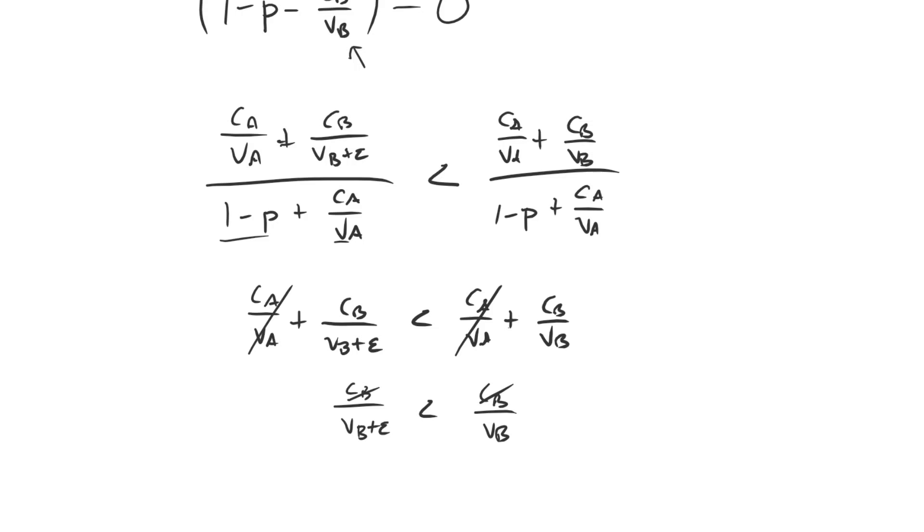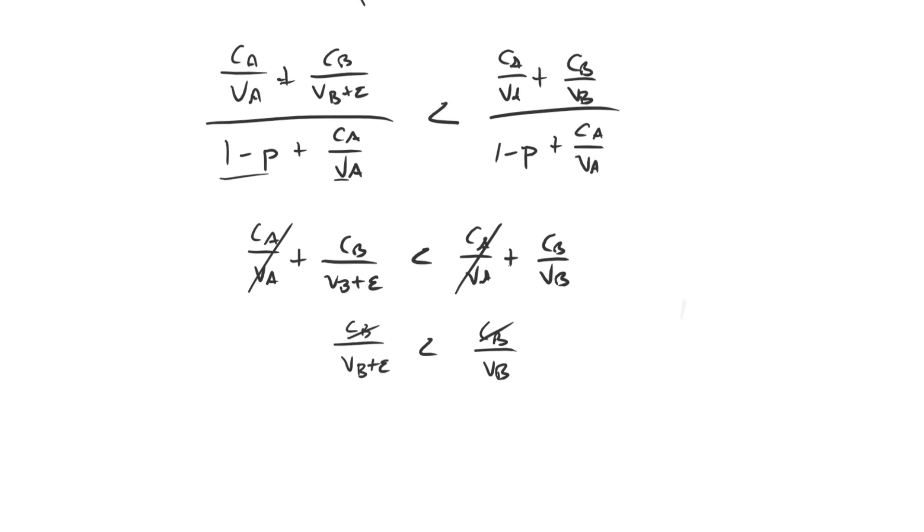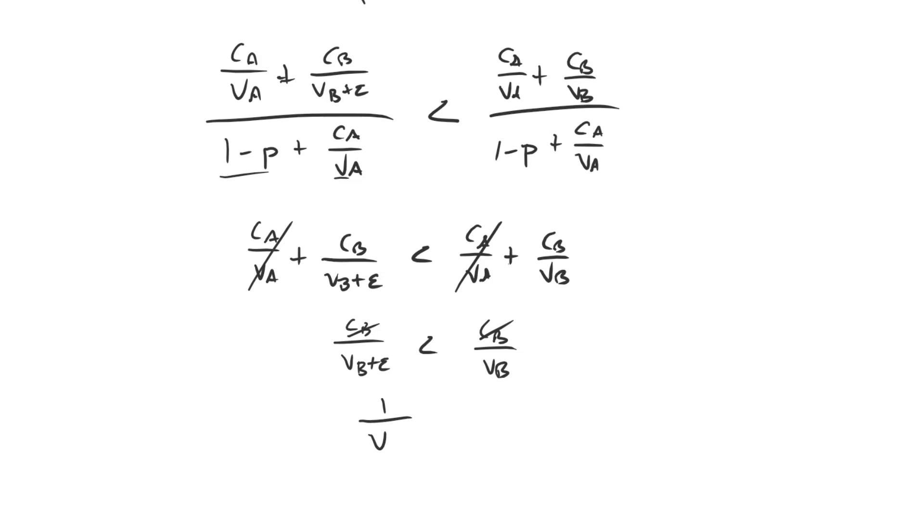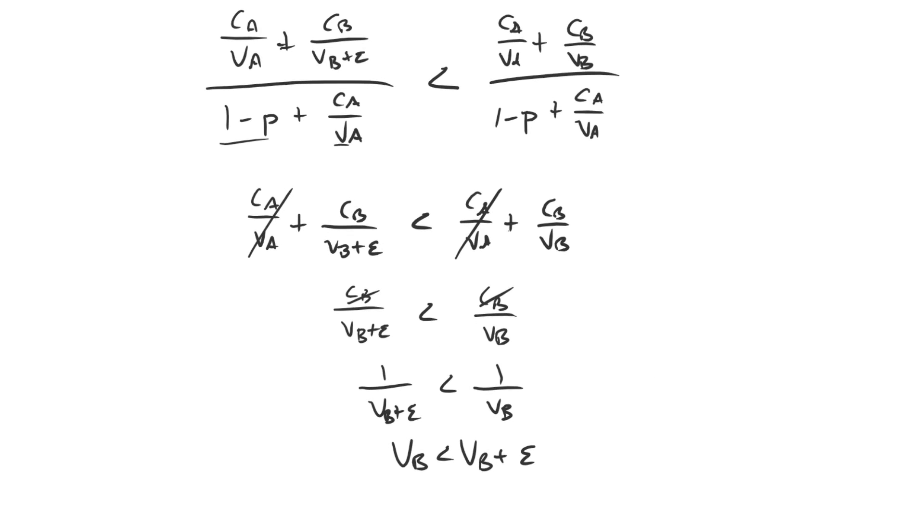Well, we have CBs on both of the numerators. So we can get rid of those. We don't have to worry about flipping anything again because CB is a positive value. Now we're just left with some simple fractions. We can still get rid of those fractions by multiplying off the denominators and shifting them over to the opposite side's numerator. So if we do that, we get VB less than VB plus epsilon. What's more, we don't have to worry about flipping the inequality because both VB and epsilon are positive values. And you can see that we're going to end up concluding that epsilon is greater than 0, which is true. Excellent.